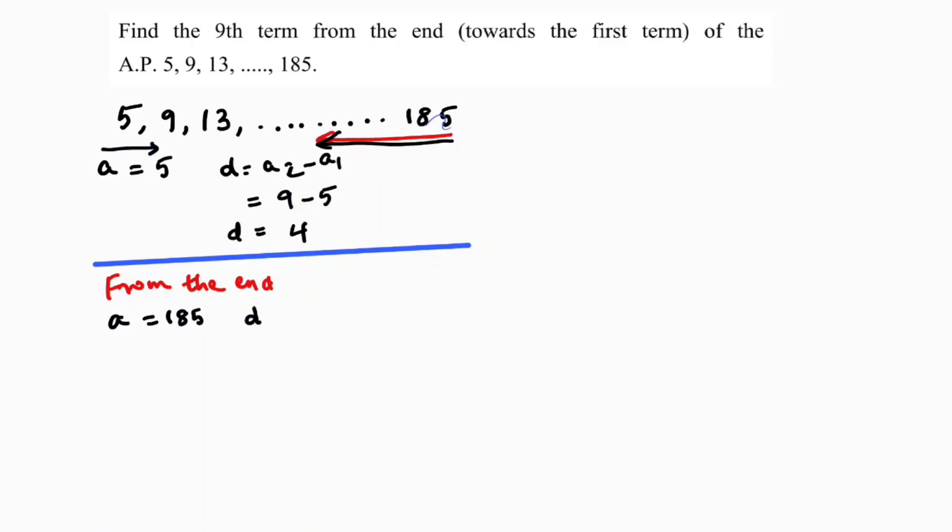And the common difference in this direction, I got plus 4. So if we come in the opposite direction, it will be minus 4, and you need to find the ninth term.